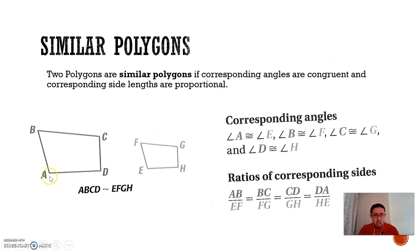Essentially, angle A is congruent to E, B is congruent to F, C is congruent to G, and D is congruent to H. If all of those angles are congruent and the corresponding lengths AB and EF, BC and FG, CD and GH, and DA and HE all have equal ratios, then you have two similar polygons.